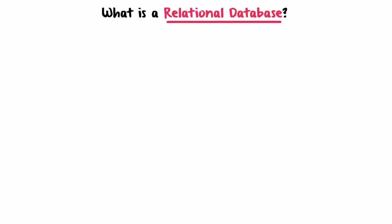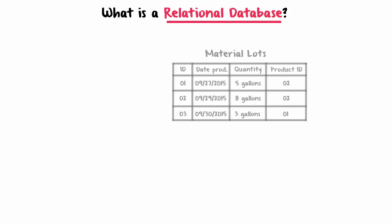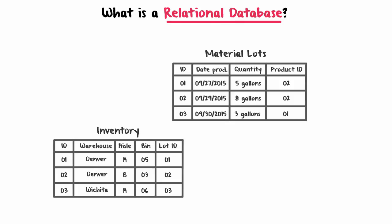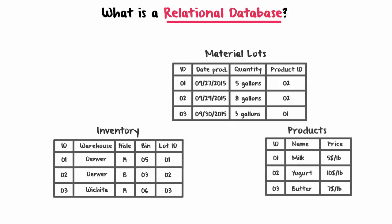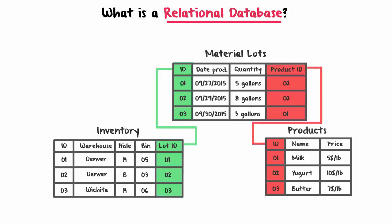Let's see an example. Say we have a database that contains manufacturing data. The database contains a table called material lots, which tracks the batches of products produced. It also has a table called inventory, which tracks where the batches are stored, and products, with all the different product numbers and names. As we can see, the columns in one table often correspond to a column in another table, so these tables have relationships that link them, making this a relational database. A relational database management system, or RDBMS, is simply the software you use to create and manage this type of database.